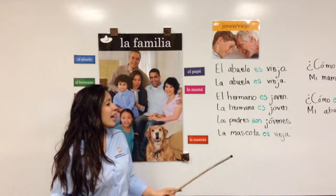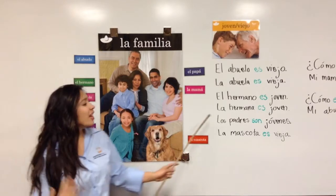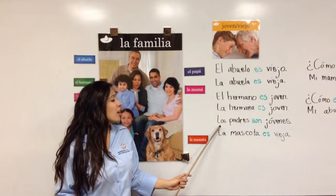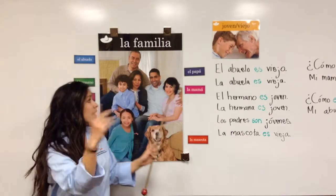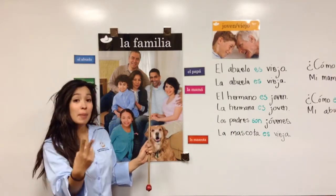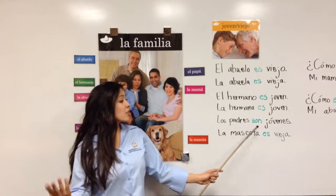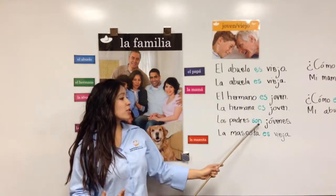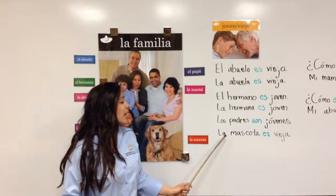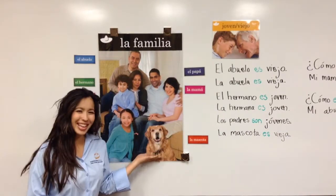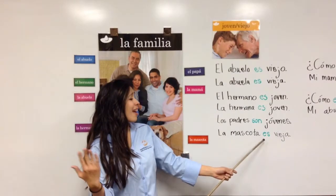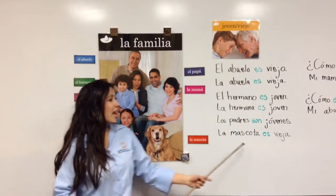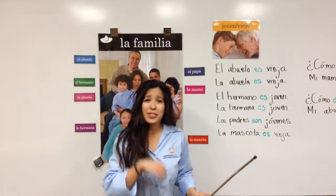La hermana, la hermana es joven. Los padres, la mamá y el papá. Los padres son jóvenes. La mascota, la mascota es vieja.